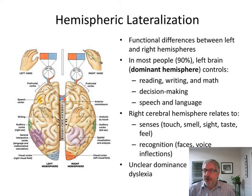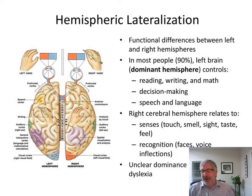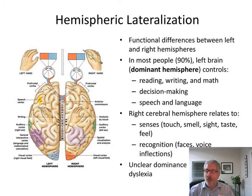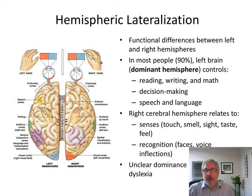Hemispheric lateralization. Everybody's heard about left brain, right brain. Most people are left brain dominant — 90% of people are dominant in the left brain, which handles reading, writing, math, decision making, speech and language — mostly in that hemisphere. The right side has touch, smell, sight, taste, recognition, voices, voice inflections. If you have unclear dominance between the right and the left, sometimes you'll have dyslexia — that's generally associated with unclear dominance between those two areas.